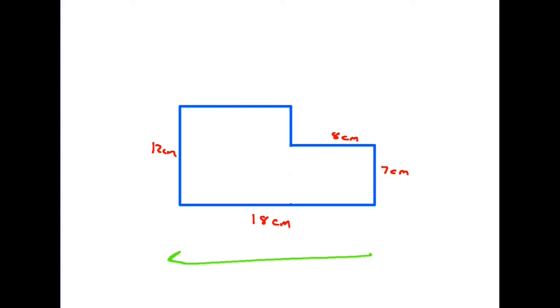So what are the missing lengths? Well if we look at the width of this shape, the entire width is 18. This little piece here is 8, so we know that it's 8 from there to there. Therefore this bit here must be 10 because 8 plus 10 must equal 18.